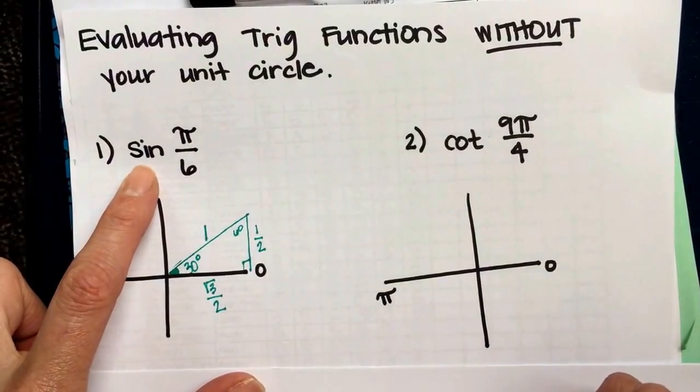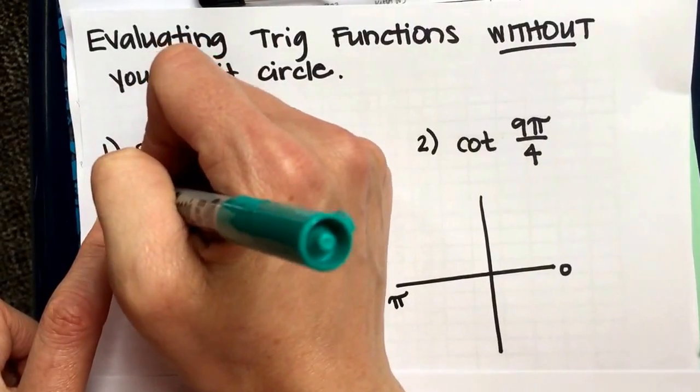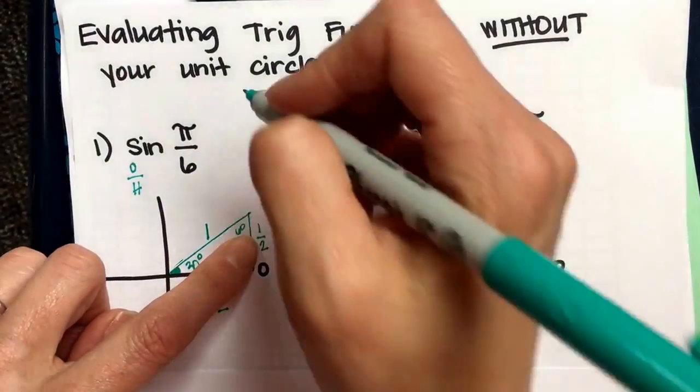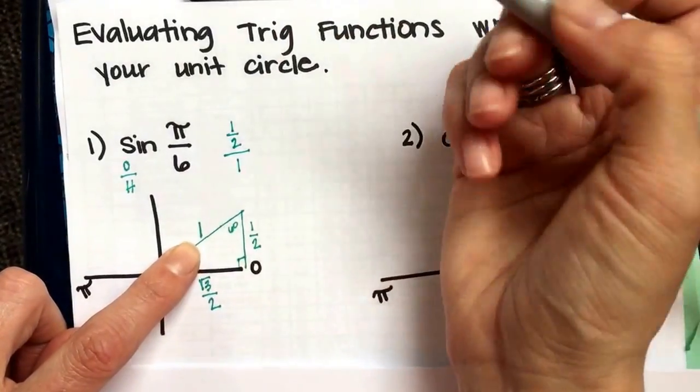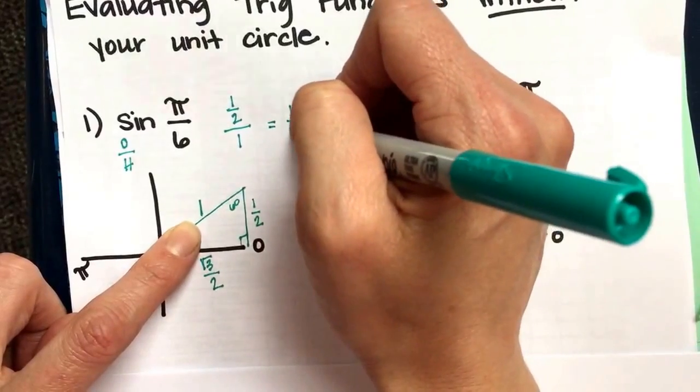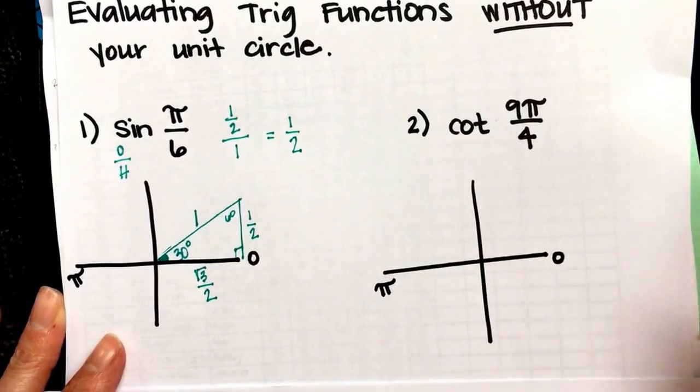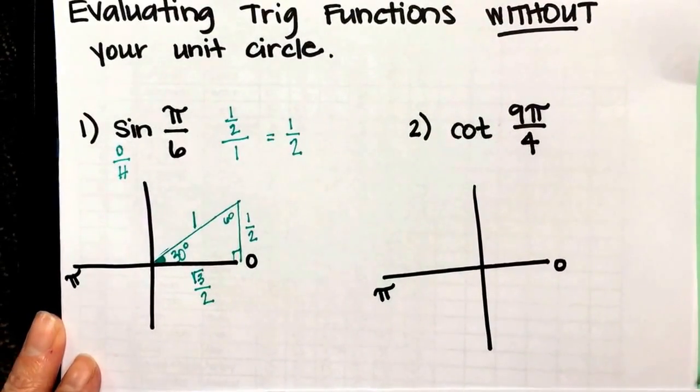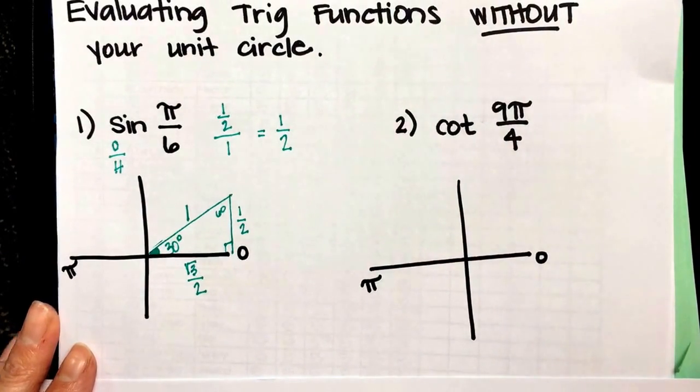Sine, if you think about SOH CAH TOA, sine is the length of the opposite side divided by the length of the hypotenuse. So from the angle at the origin, the opposite side is 1 half divided by the hypotenuse is 1. Dividing by 1 doesn't change the number. So 1 half divided by 1 is 1 half. And I know it feels like this is difficult, and that it's taking so much longer than it does with a unit circle. It's definitely not as fast as the unit circle if you're proficient with the unit circle. But it's not nearly as long as I'm taking here either, while I'm trying to explain.